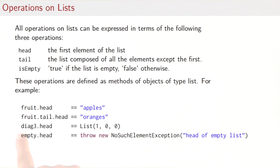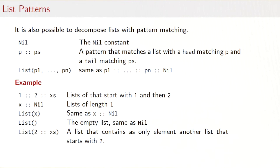If you take the diagonal of size three, its head element is the first row: List(1, 0, 0). If you take the head of the empty list, you get a NoSuchElementException telling you that you tried to take the head of an empty list.